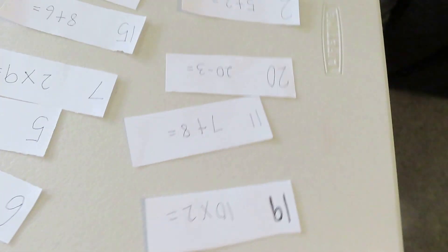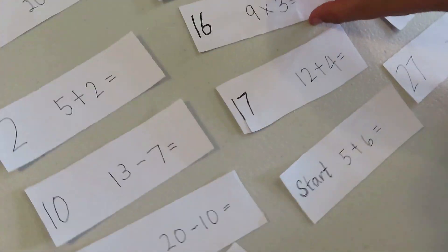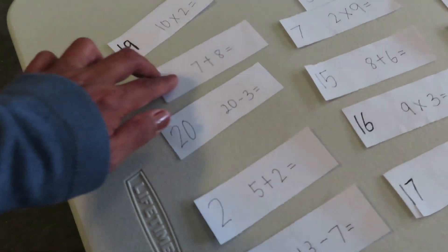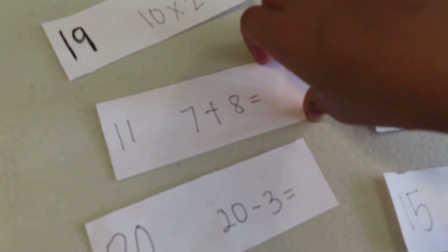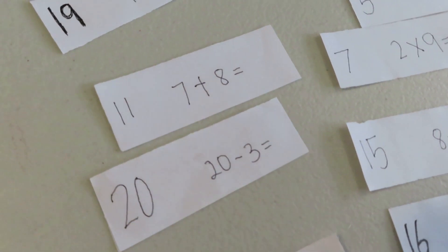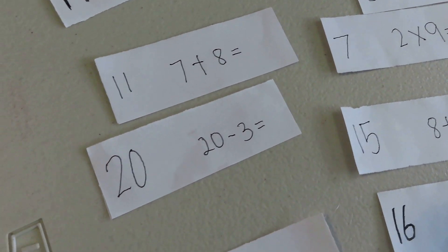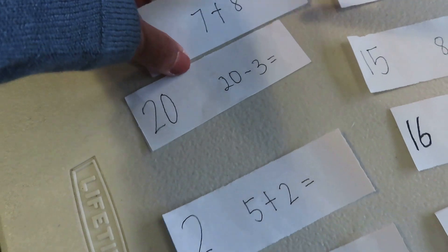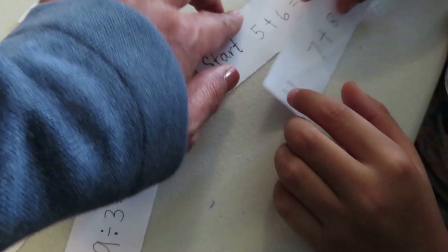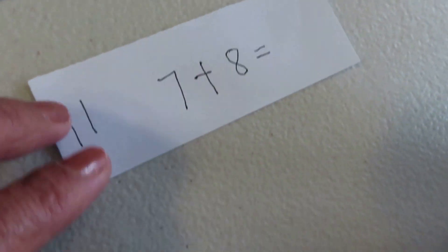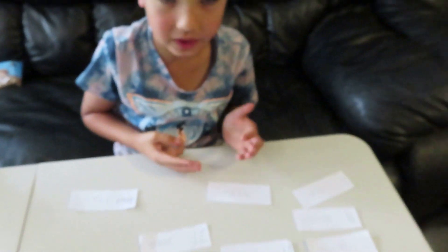Okay, go find the 11. Find number 11. The answer is number 11. Seven plus eight — so where is the start? This is the start. You finished already! Take that off. Next is seven plus eight: 15. So go find the 15.